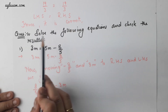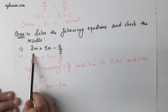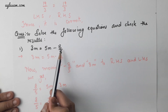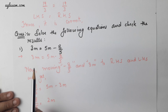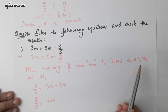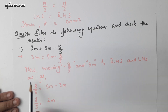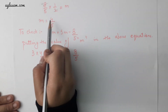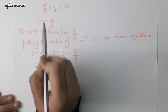Question number 10: solve the following equation and check the result. 3m equals to 5m minus 8 by 5. Moving the terms, we get 8 by 5 equals to 5m minus 3m, so 8 by 5 equals to 2m. Therefore, m equals to 4 by 5.